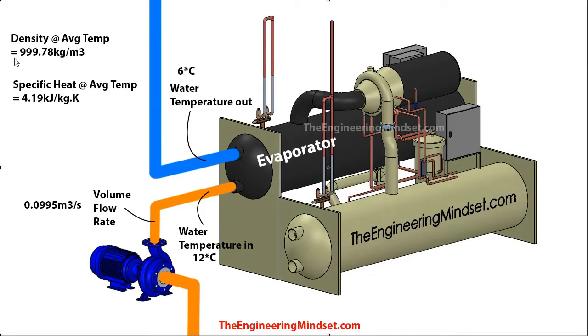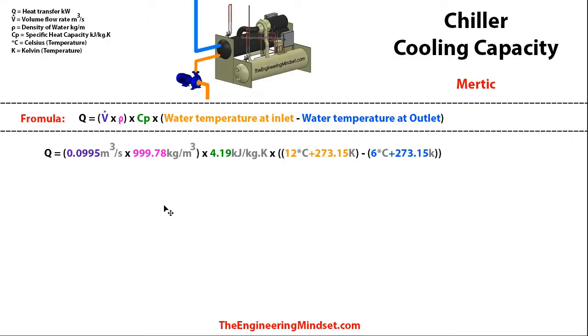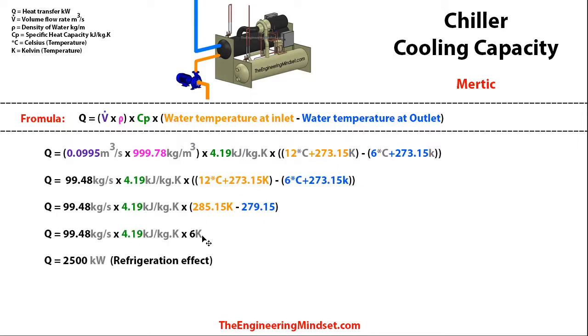In our previous video we looked at how to calculate the cooling capacity of a chiller, and for that you would need to know the flow rate of water through the chiller. There's a link on the screen now if you want to see that, or see the video description below.